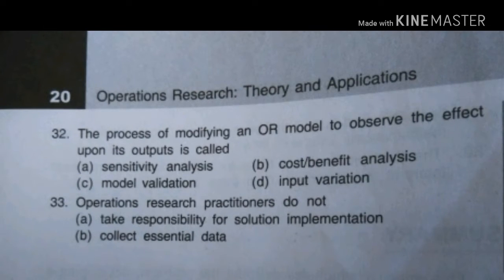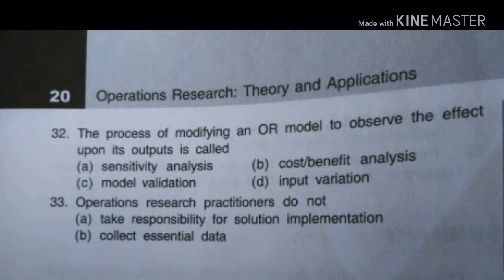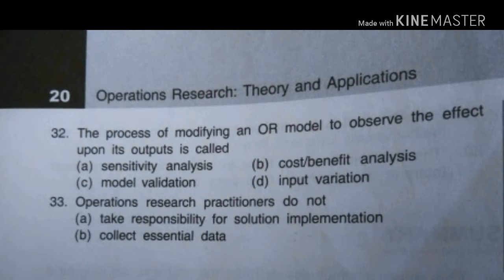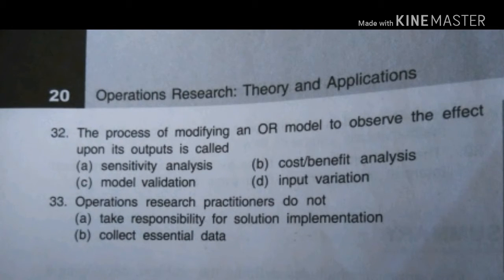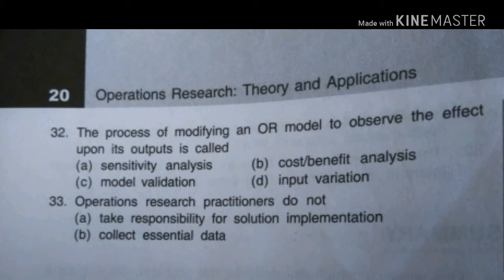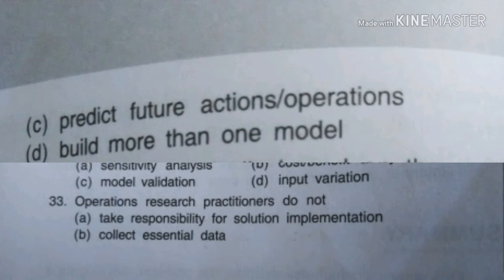Thirty-three. Operations Research practitioner - here is the correct spelling, practitioner - do not: A take responsibility for the solution implementation, B is correct and study data, C predict future action and operation, D build more than one model. Correct answer is predict future action and operation.